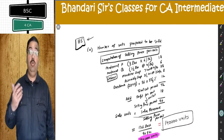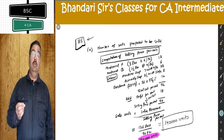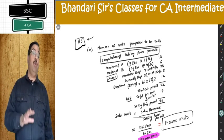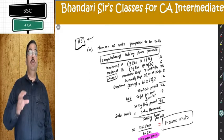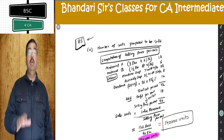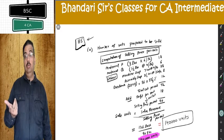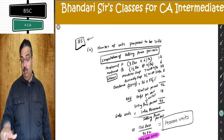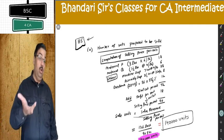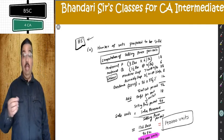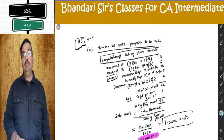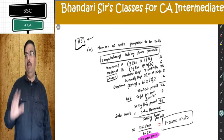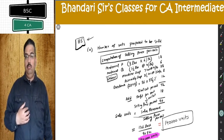B5 is the first question where you are not given the budgeted sale quantity. In all earlier questions, sale quantity was a starting point — from there we computed production, from production consumption, from consumption purchase. We will do the same here, but what is missing? Budgeted sale units. You are required in part A to calculate the number of units proposed to be sold.